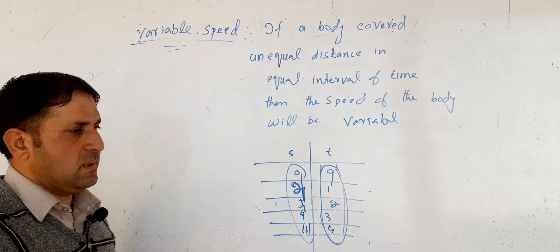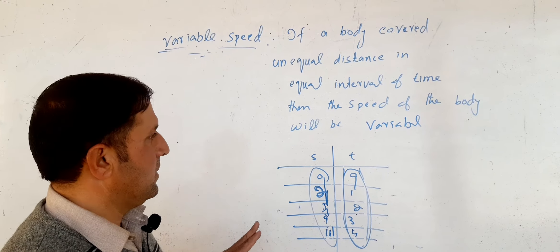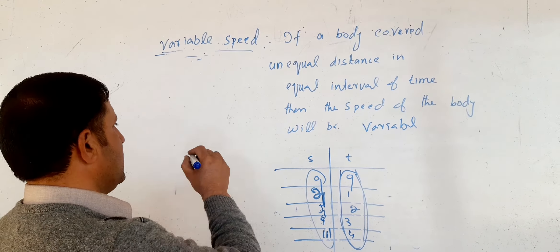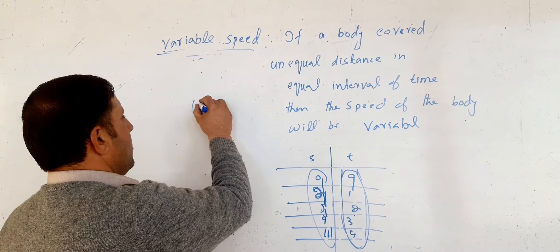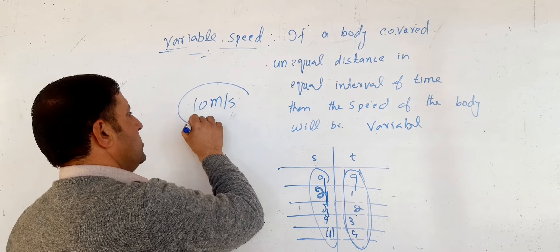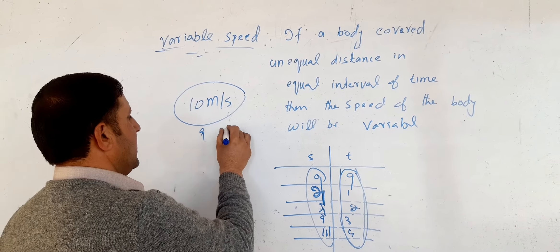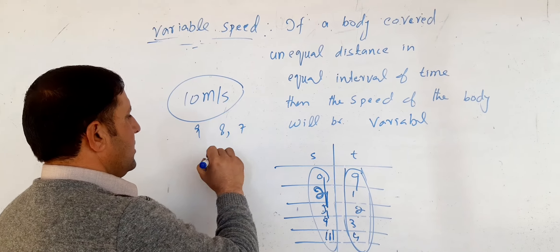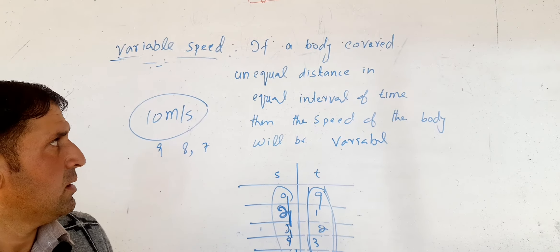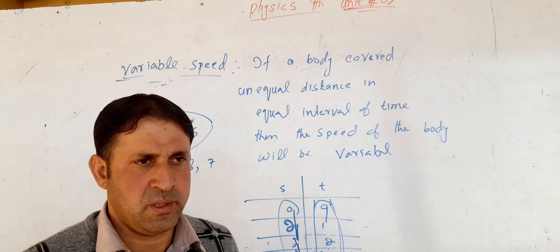If the speed is constant, for example 5, that is uniform speed. If the speed changes — 9, 8, 7 — that is variable speed. So speed can be either uniform speed or variable speed.